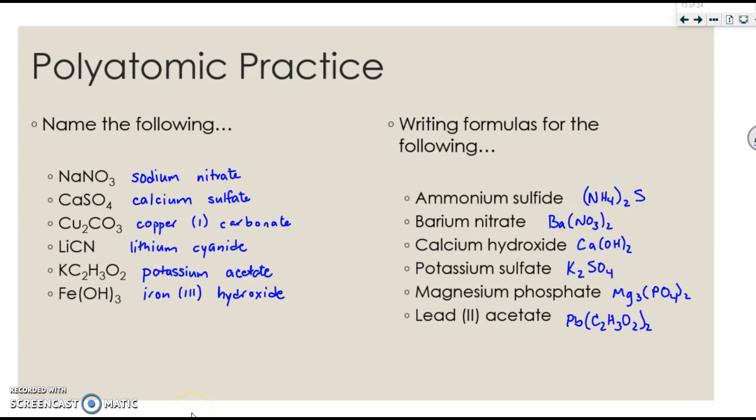Please check your answers. Remember that all the normal rules still apply, so your transition metals still require a Roman numeral, and your other elements, if necessary, still change accordingly. Also remember that whenever you have more than one of a polyatomic ion, you have to put it in parentheses.